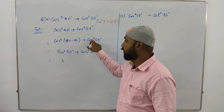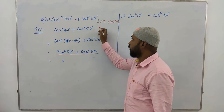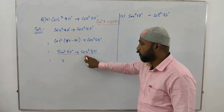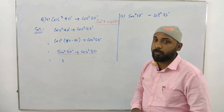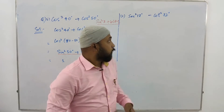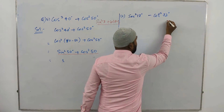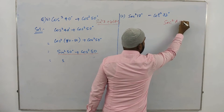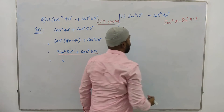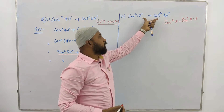A similar question: sec²18 minus cot²72. The formula we recall is sec²a − tan²a = 1. If we convert cot²72 into tan²18, our problem is solved and we get 1. We can write 72 as 90 minus 18 to do this conversion.